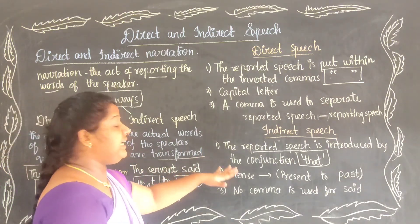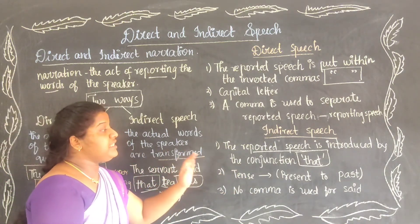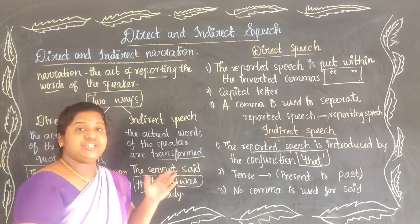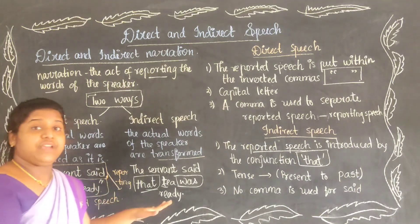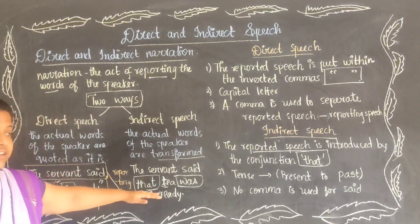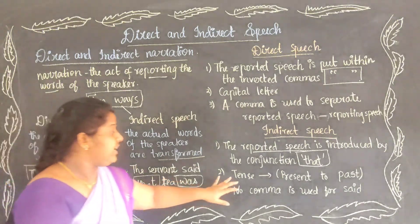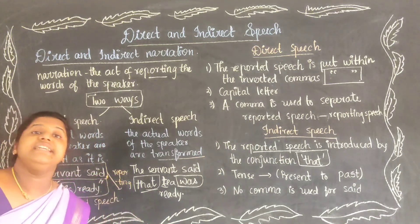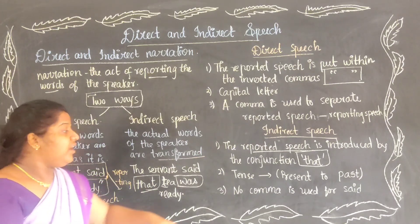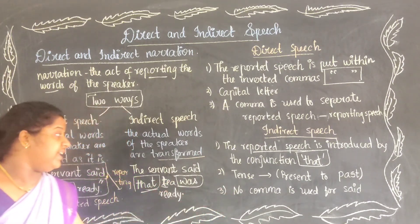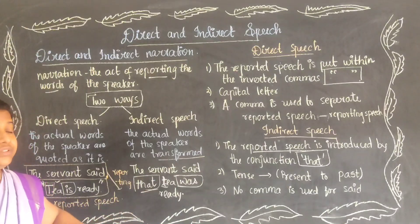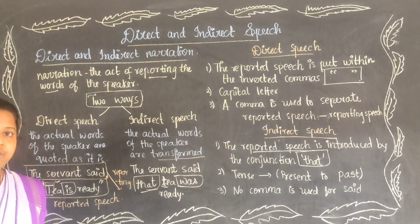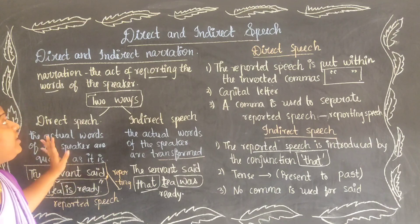To remember indirect speech: the reported speech is introduced by the conjunction 'that'; tense changes from present tense to past tense; and no comma is used after 'said'. Instead of a comma, we use the conjunction 'that'. That is the key difference between direct and indirect speech.